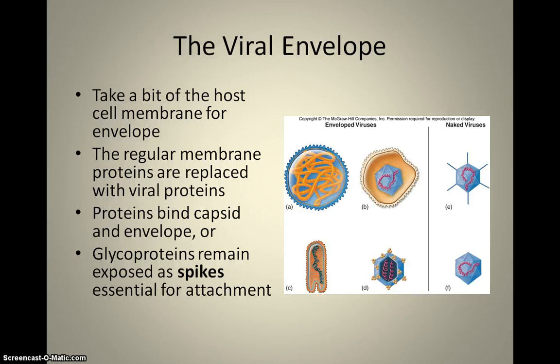The viral envelope is actually part of the host cell membrane. When the virus leaves the host cell to find a new cell to attack, it takes part of the membrane with it. In the surface of that membrane are some spikes called glycoproteins, and those spikes allow it to bind to a new host cell. It looks similar to the cell it came from, making it easier to find a similar host cell, attach, and then invade it.